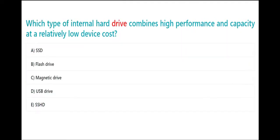Which type of internal hard drive combines high performance and capacity at a relatively low device cost? A. SSD B. Flash drive C. Magnetic drive D. USB drive E. SSHD. The correct answer is E. SSHD.